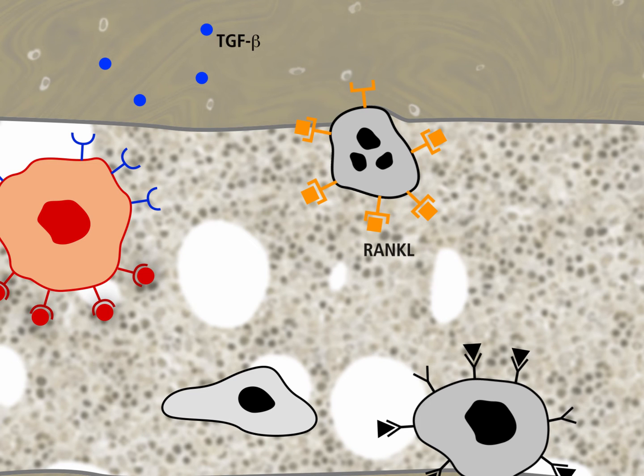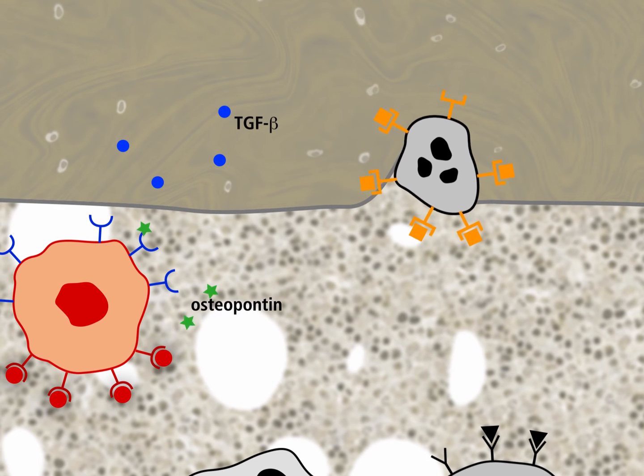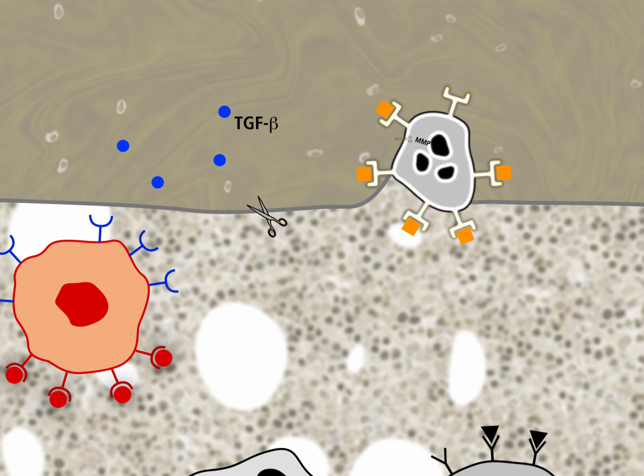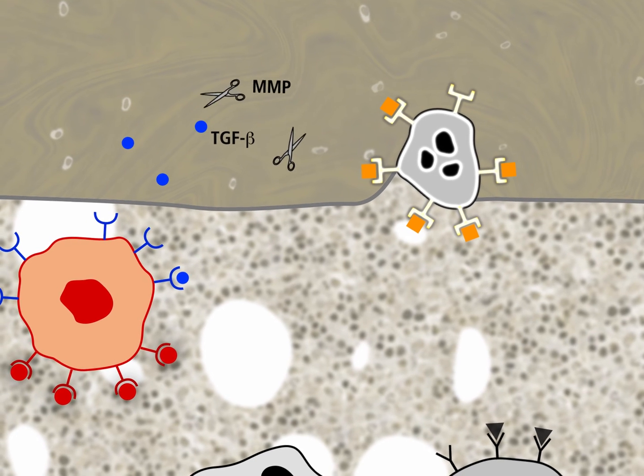Mature osteoclasts degrade the bone matrix. Osteopontin released from the mammary carcinoma cells activates the osteoclasts and induces the synthesis of matrix metalloproteinases. The matrix metalloproteinases liberate TGF-beta from the bone matrix.